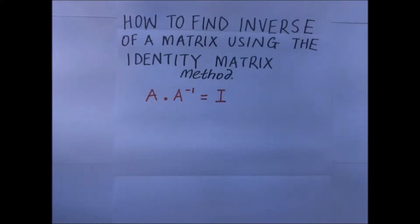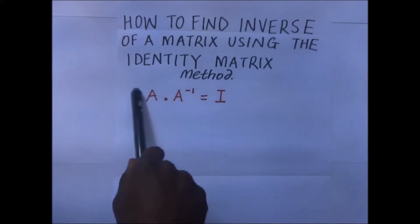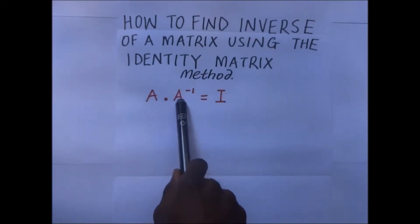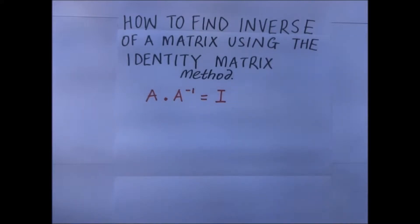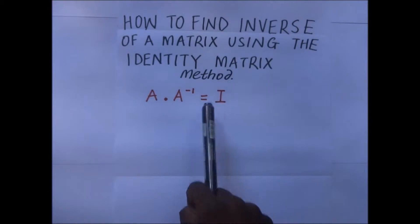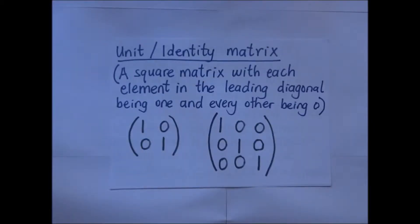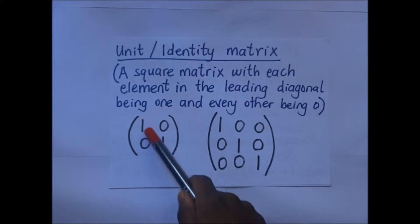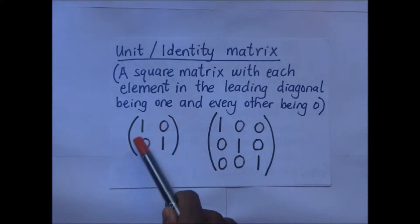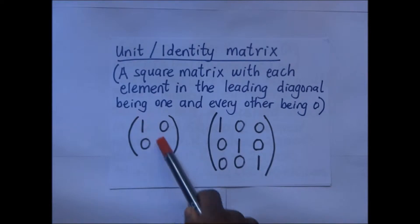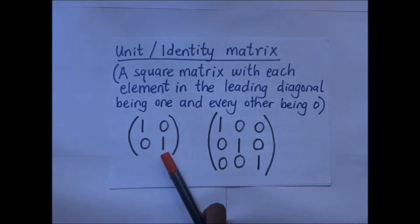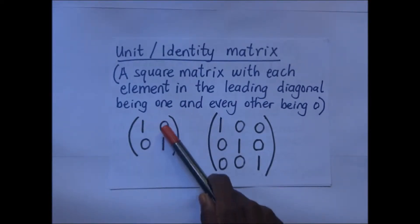In this method of finding the inverse of a matrix using the identity matrix method, we use the property that when you multiply a matrix by its inverse you get an identity matrix. An identity matrix is simply a matrix with the elements in its leading diagonal being one — all the elements in the leading diagonal are one and the rest are zeros.